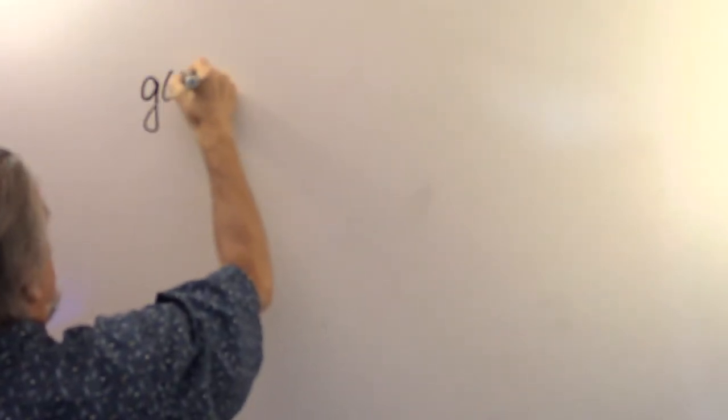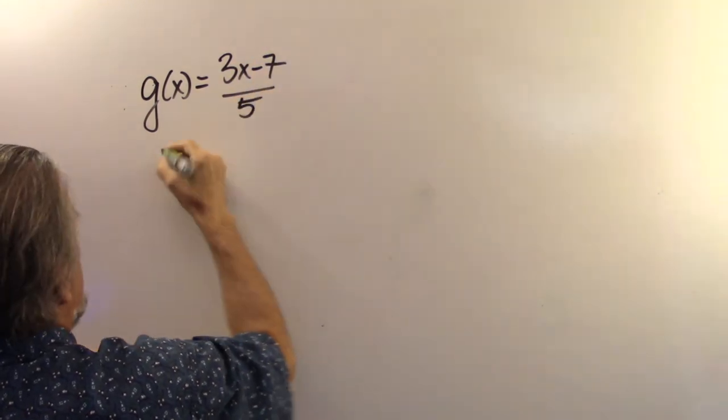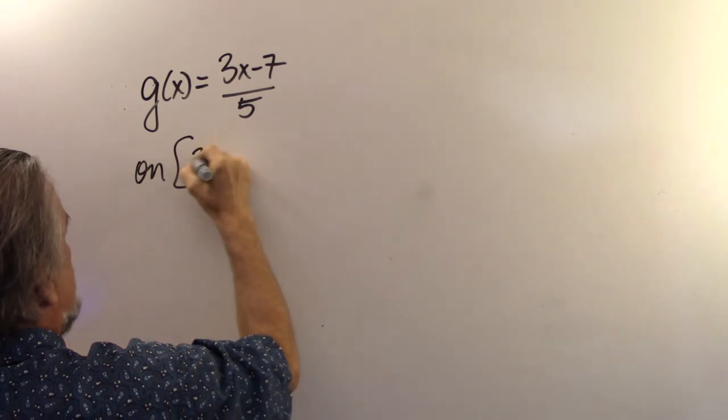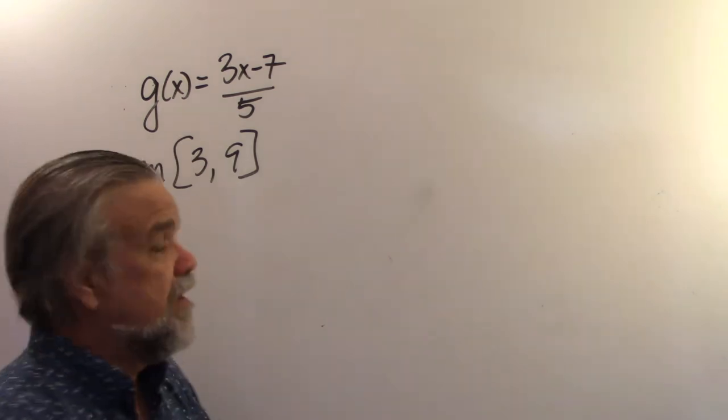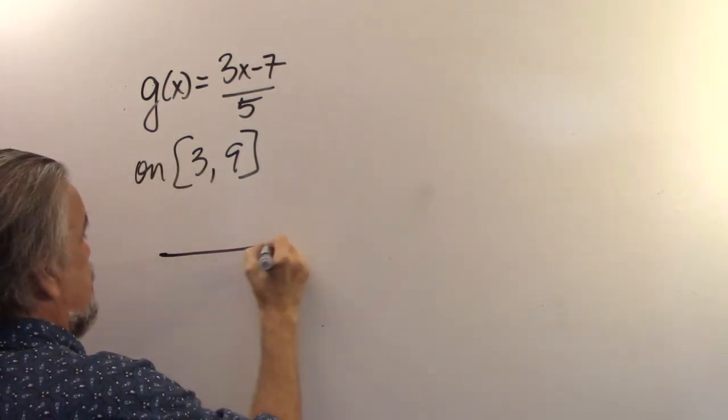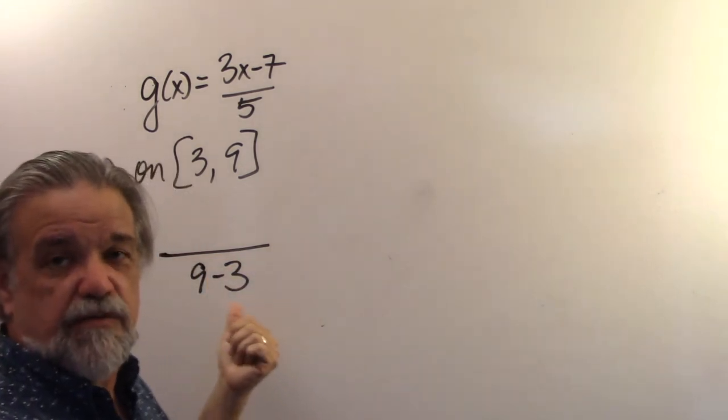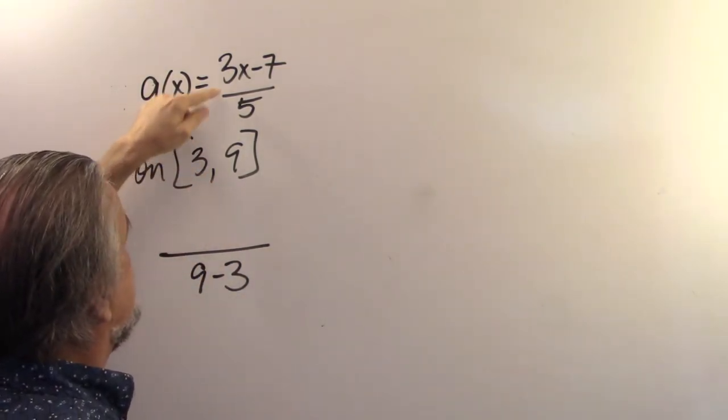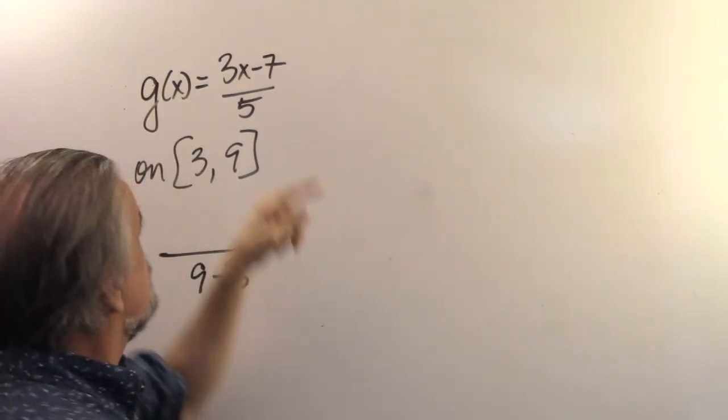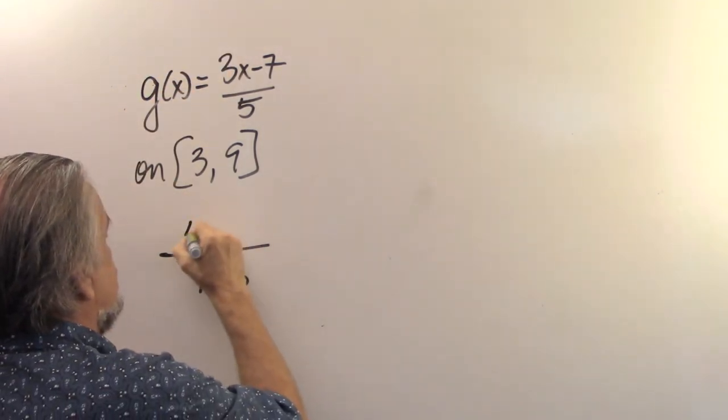This time, let's look at g(x) equals 3x minus 7 over 5. And I want this on the interval from 3 to 9. Same procedure. We're going to have a fraction here, 9 minus 3. I always arrange it so that I have a positive number in the denominator. I just prefer that. So I want g(9). g(9) is going to be 27 minus 7, which is 20, over 5. So that's 4.